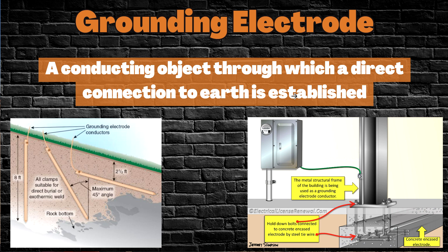So to recap: the grounded conductor is generally speaking the neutral and carries current; the grounding conductor or EGC is the safety wire attached to devices that don't normally carry current; and the grounding electrode is the object in direct contact with the earth. And that's it for today.